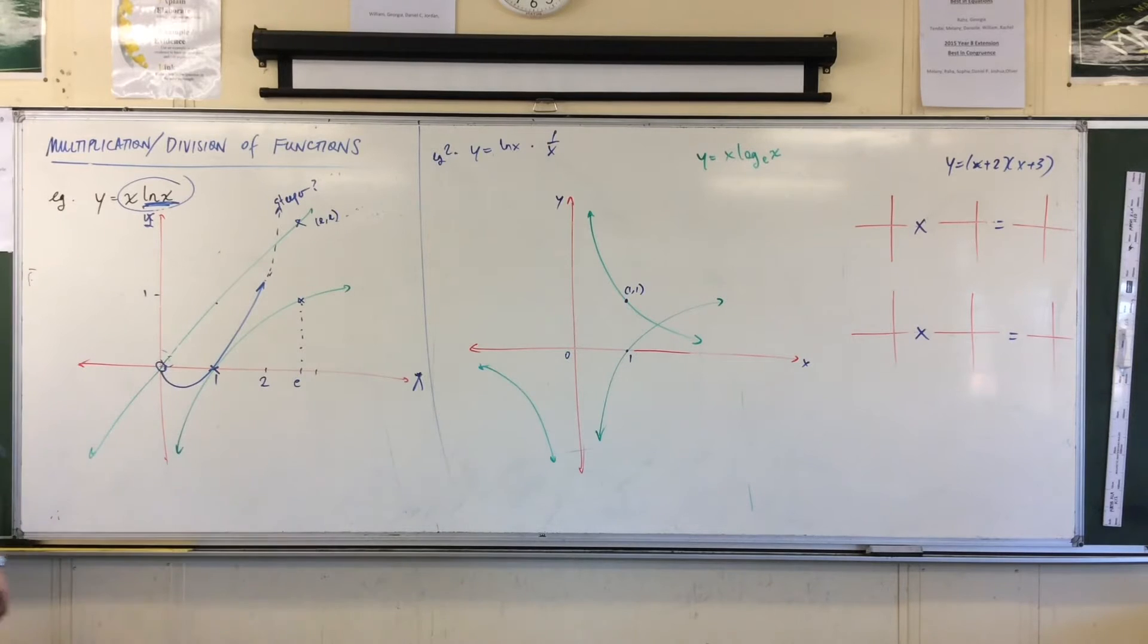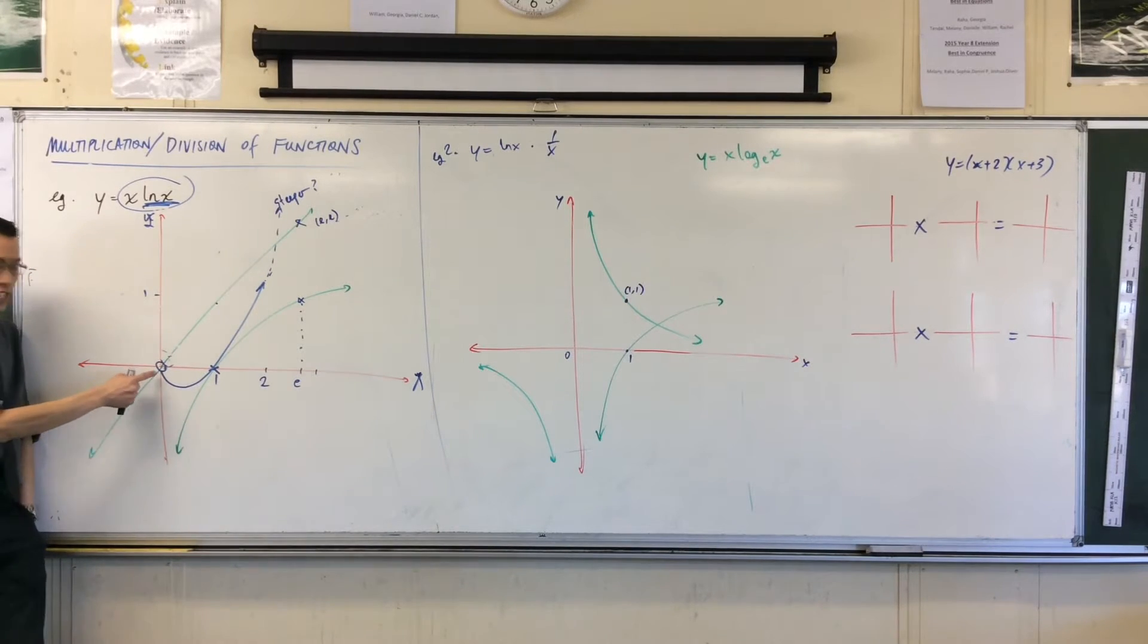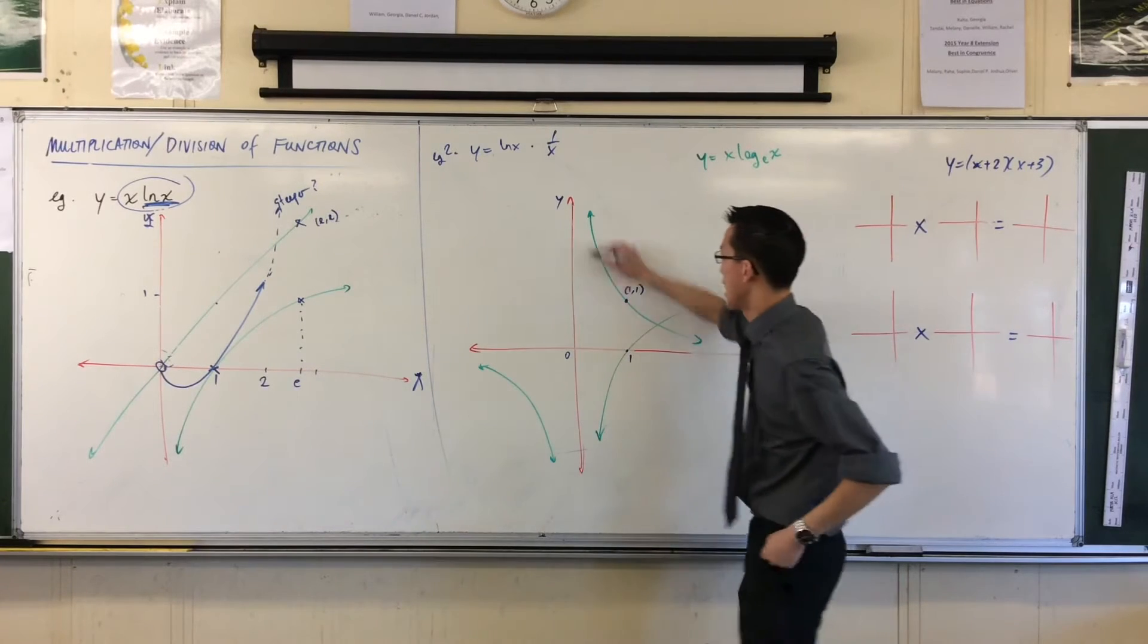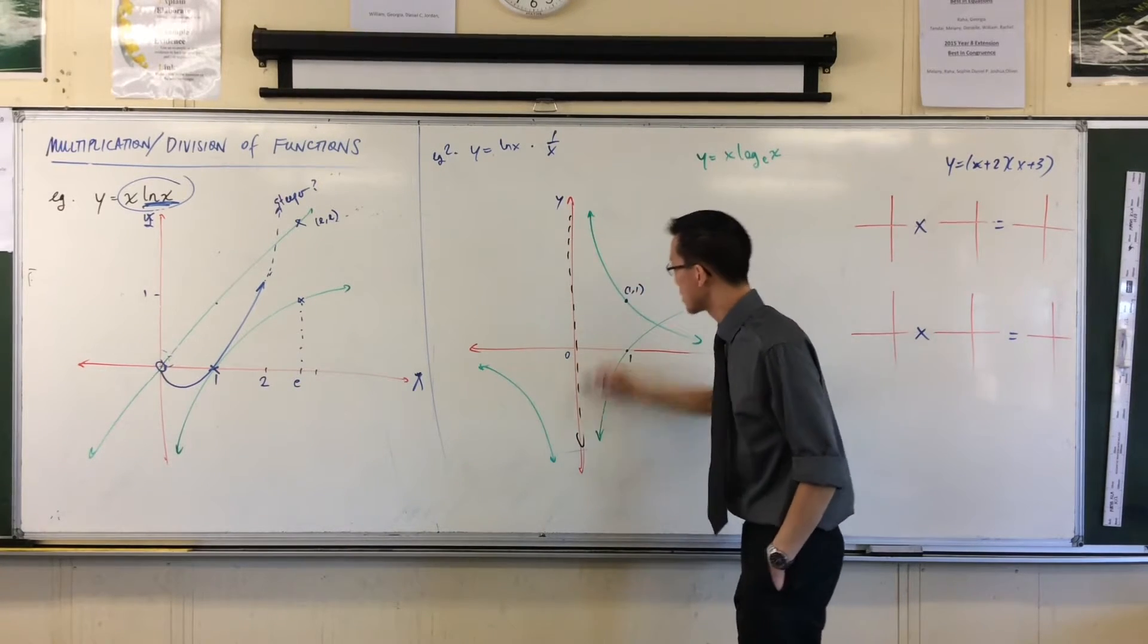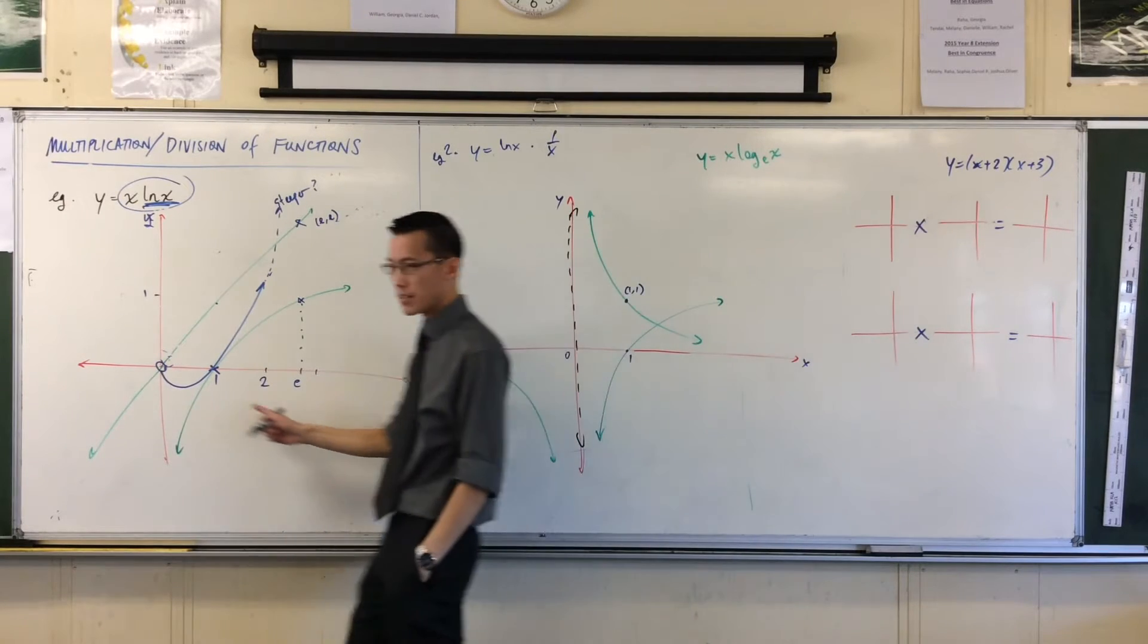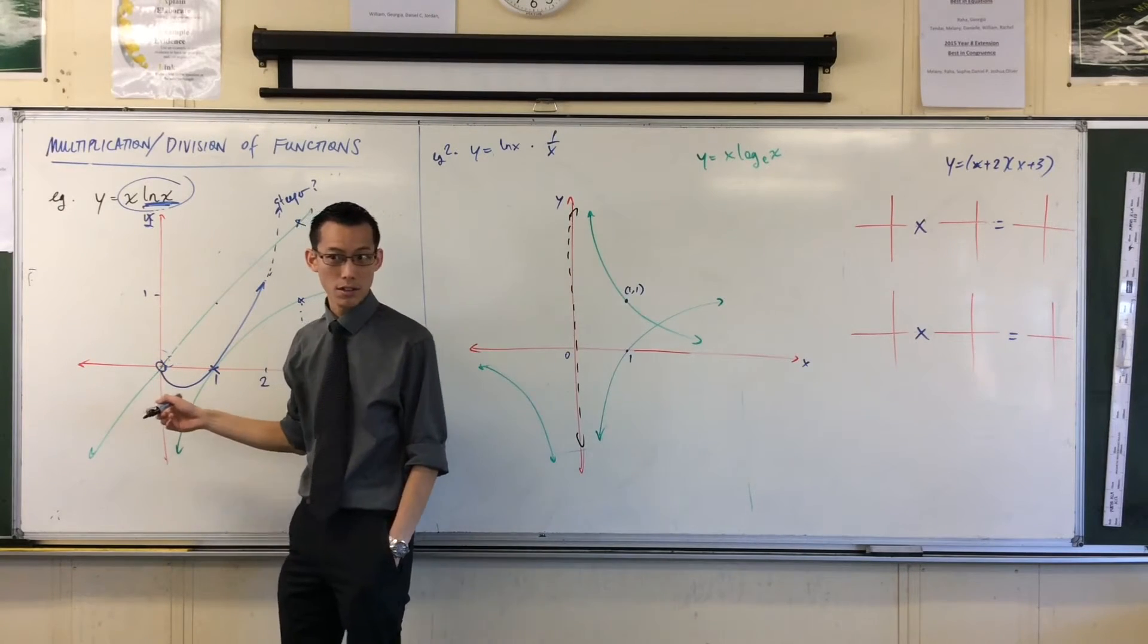The second thing I notice is both of these graphs do not exist at x equals 0. I wasn't going to make a big deal out of this, but I got a great question before which highlighted the fact that I should. I just have a hollow circle here because it doesn't exist, it's outside the domain of log x. But I'm not going to put a hollow circle on this graph. In fact, I'm going to put an asymptote. The question is, how do I know that this one has an asymptote but this one just has a hollow circle?